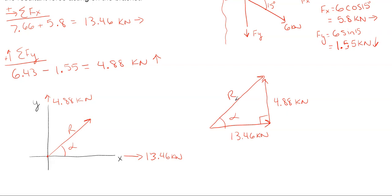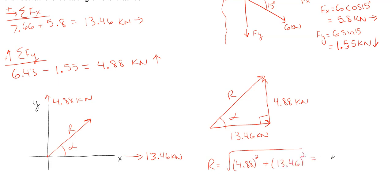So how do we solve for R? Since we have a right triangle, we can use the Pythagorean theorem. R is the square root of the two sides squared and added together: the square root of 4.88 squared plus 13.46 squared. Adding those together and taking the square root, we end up with 14.32 kilonewtons of force in that general upright direction. That is my resultant between my two original forces of 10 and 6 kilonewtons.